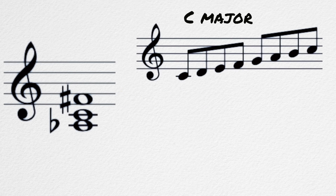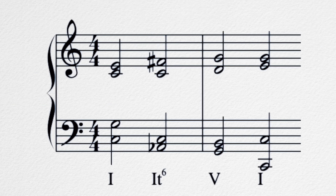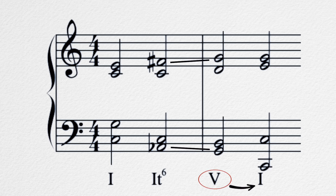In the key of C, to find the Italian sixth we take the root (C), the fourth (F), and the sixth (A). We raise the fourth and lower the sixth a half step, and we get C, F sharp, A flat. The lowered sixth then gets put into the bass, and this creates the augmented sixth interval. This then moves towards the dominant of the key and eventually resolves back to the tonic.